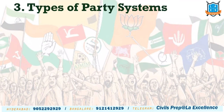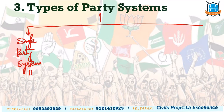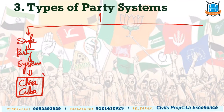Then the question is how many political parties should we have? India approximately has 2000 plus political parties. There are different types of party systems, generally classified into three ways. The first is the single-party dominant system, where one single party dominates the entire political system. In some communist countries like China and Cuba, only one single party is allowed, even constitutionally. Such a system is known as a single-party or one-party system.